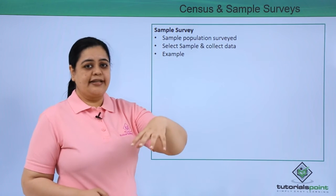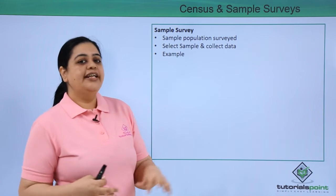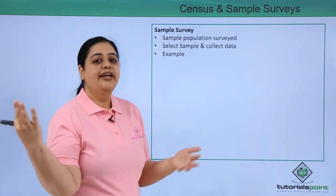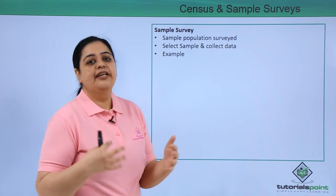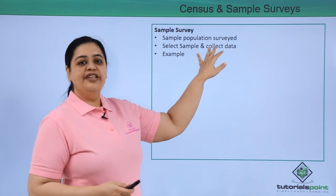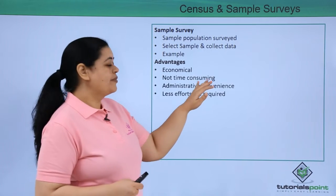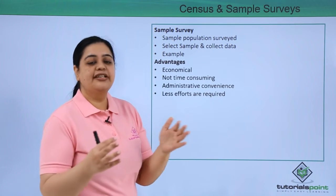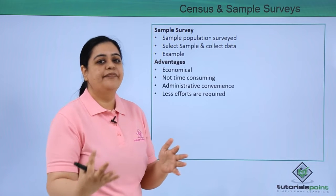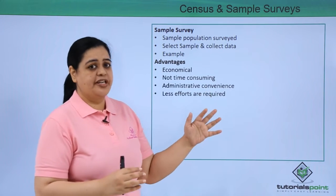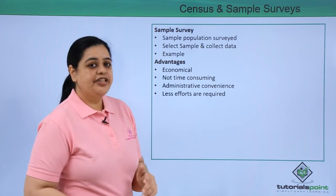In a sample survey, only a sample of the population gets surveyed. For example, if I want to find out how many people like chocolate ice cream, rather than asking the entire population, the best approach is to collect a sample and make a conclusion based on that data. The advantages are that it is very economical, not time-consuming, and administratively convenient since you are not covering a very large geographical area. Less effort is required compared to surveying the entire population.